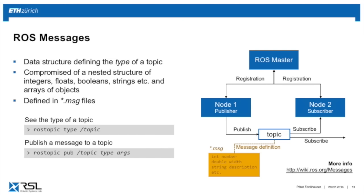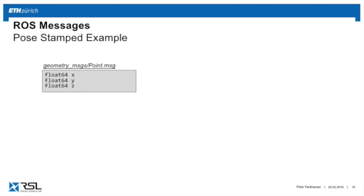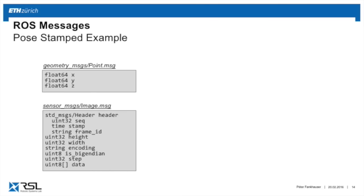A publisher publishes on a topic name, which is inherently coupled with a message definition. Here's an example: a message from the geometry_messages package of type Point. It's a text file with the .msg extension. In this case we have three float64 doubles with coordinates x, y, and z. A more complex example from sensor_messages includes a header with sequence number, timestamp, and frame ID, plus image height, width, encoding, and the image data as an array.